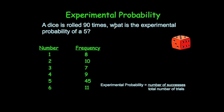A dice is rolled 90 times. What is the experimental probability of a 5? So remember, it's the number of successes over the number of trials. So here we've got number 1, 8 times; 2, 10 times; 3, 7 times; 4, 9 times; 5, 45 times; and 6, 11 times.